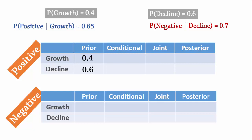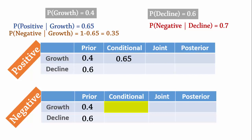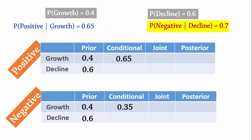The probability of positive given growth is 0.65, which goes into the conditional cell here. Some students immediately assume the probability of positive given decline is 0.35, but that is incorrect. The complement of positive given growth is negative given growth. Therefore, the correct cell for 0.35 — that is, 1 minus 0.65 — is the conditional cell for negative given growth. Also, the probability of negative given decline is 0.7, and its complement, positive given decline, is 1 minus 0.7, which equals 0.3.